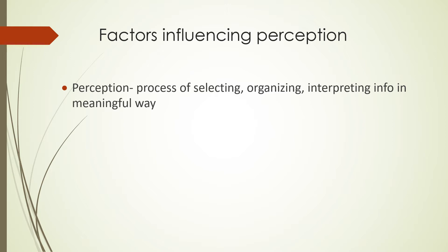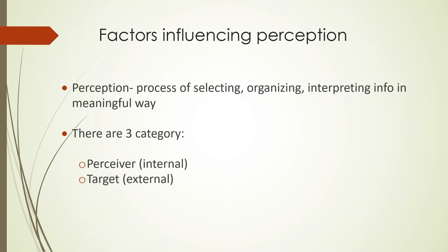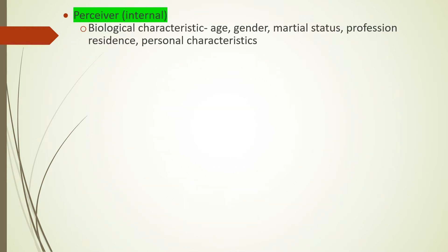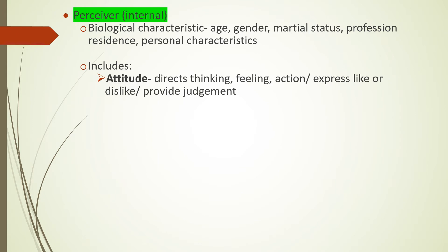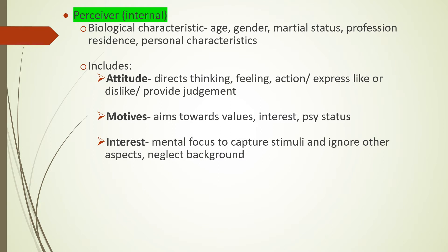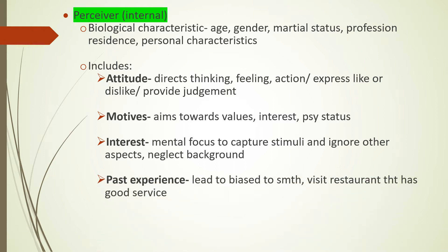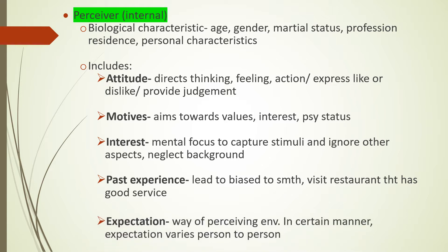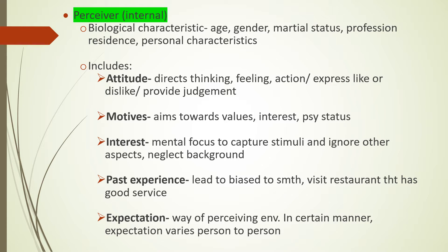Talking about the factors influencing perception — perception is the process of selecting, organizing, and interpreting information in a meaningful way. There are three categories: perceiver (internal), target (external), and situation. For the perceiver, internal biological characteristics include age, gender, marital status, profession, and residence. Personal characteristics include attitudes (thinking, feeling, action, likes or dislikes), motives (values, interest, psychological status), interest (mental focus to capture stimuli), past experience (which leads to bias), and expectation (which varies from person to person).